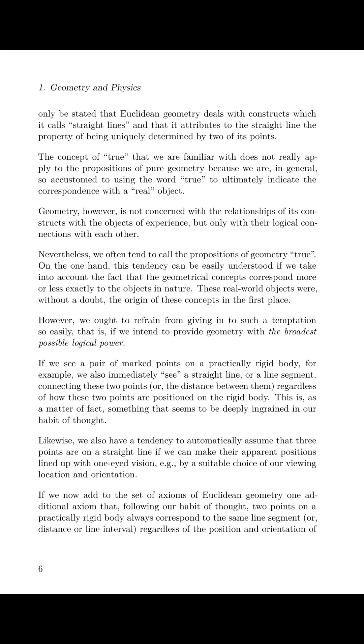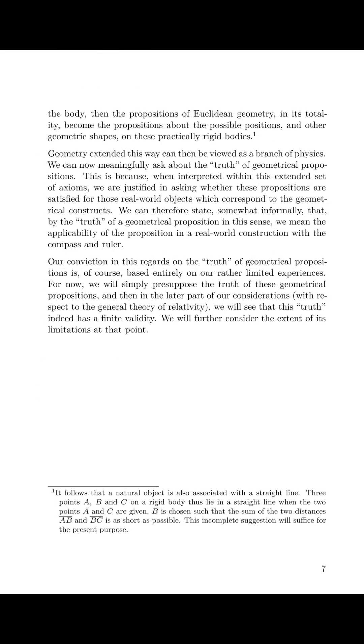If we now add to the set of axioms of Euclidean geometry one additional axiom that, following our habit of thought, two points on a practically rigid body always correspond to the same line segment or distance or line interval, regardless of the position and orientation of the body, then the propositions of Euclidean geometry, in its totality, become the propositions about the possible positions and other geometric shapes on these practically rigid bodies. Geometry extended this way can then be viewed as a branch of physics.